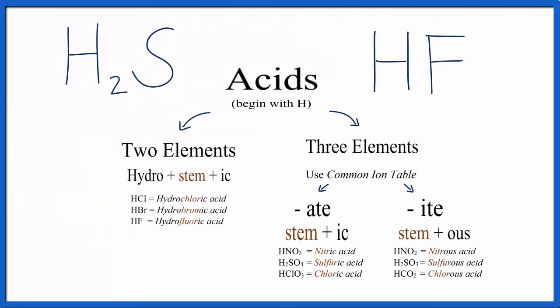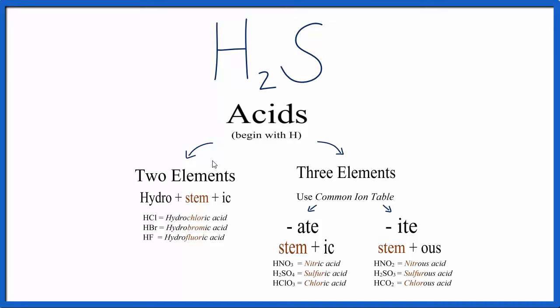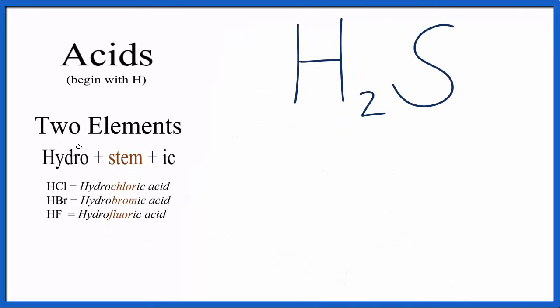So give these two a try using the flowchart. We have H2S, and then HF. For H2S, we have H and S, so we have two different elements, so we'll use this part of the table. So we write hydro, and then we write sulfur, but we're going to cross out the ending and change that to IC, and then write the name acid. That leads us with hydrosulfic acid.